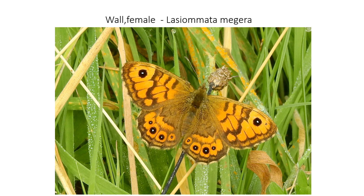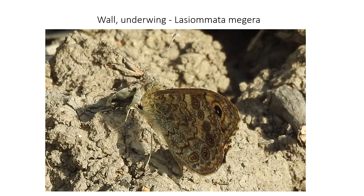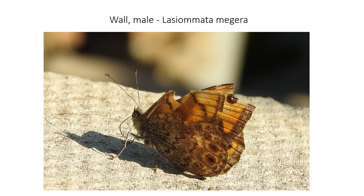This is another species on the BAP list — the wall. Lasiommata means hairy eyes. This one is a female. In the female, this black line is perpendicular — 90 degrees — to the wing margin, whereas in the male, this is a scent brand and it's parallel to the hind wing margin. I'm lucky enough to get these as regular visitors in the garden, including this one towards the end of the season that's been in quite a few battles by the looks of it.